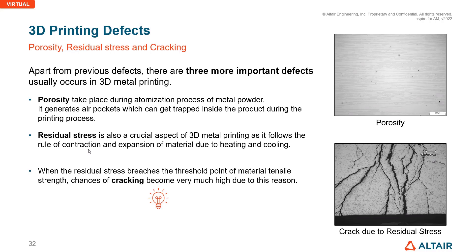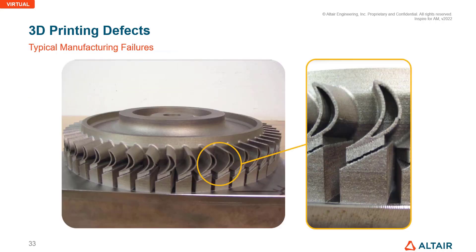Porosity, residual stress, and cracking are other important defects that commonly occur in 3D metal printing. Porosity occurs during the melting process of metal powder when air pockets become trapped inside the product. Residual stress follows the rule of contraction during cooling and expansion due to heating. When residual stress reaches the material's tensile threshold, the chances of cracking become very high, compromising part strength and aesthetics.